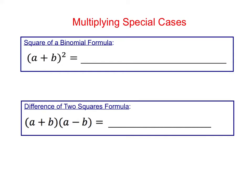For the final question on the 7.1 and 7.2 quiz review, you're going to be multiplying some special cases. Remember that there are some formulas that you can use to multiply special cases, or you can always just use the box and FOIL method.